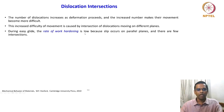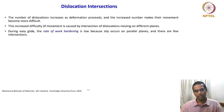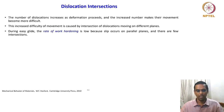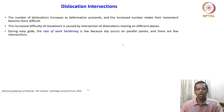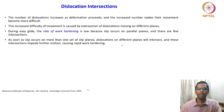During easy glide, the rate of work hardening is low. When there is no high density of dislocations, glide is enabled without any problem in a glide plane, and the work hardening rate will be low because slip occurs on parallel planes. All the possible parallel planes are favorably oriented, and the dislocations will try to move in those parallel planes, so the intersections will be minimal.